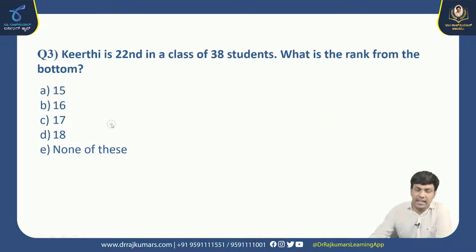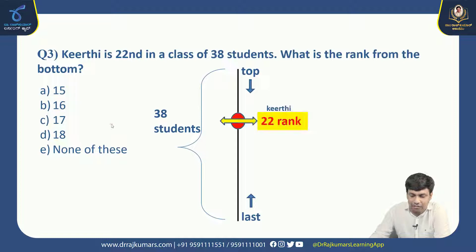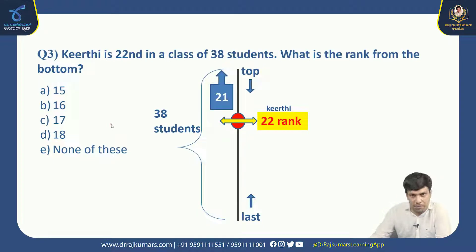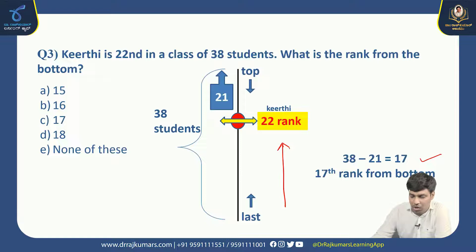Moving to the next problem: Kirti is 22nd in a class of 38. What is the rank from the bottom? There are 38 students in the classroom. Kirti is ranking 22nd from the top, meaning behind Kirti there will be 21 members who have scored more. We minus 21 from 38: 38 minus 21 equals 17. So Kirti's rank from the bottom is 17th. The right answer is option C.